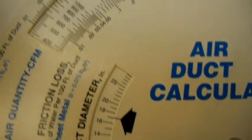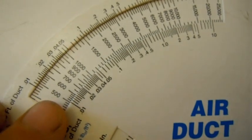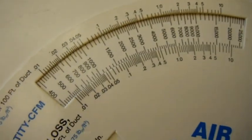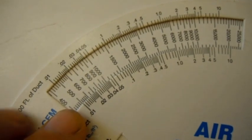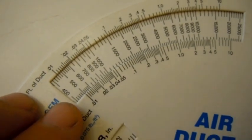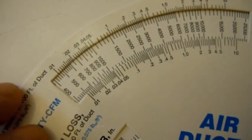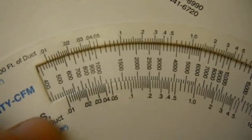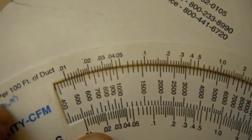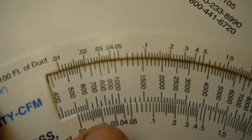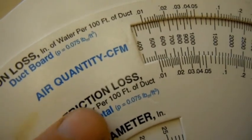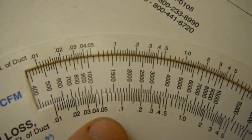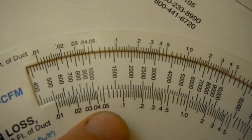Now the other handy item that the ductulator is good for is calculating the size of duct that your system really needs. Now, to give you an example, let's say you're designing a return duct to have the friction loss of .05, just for an example.